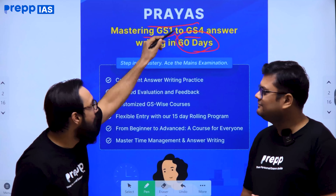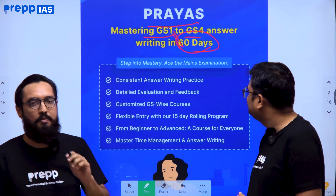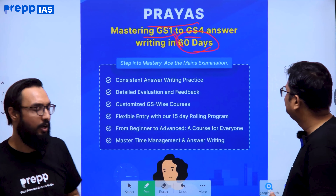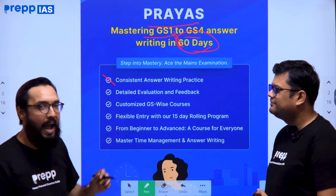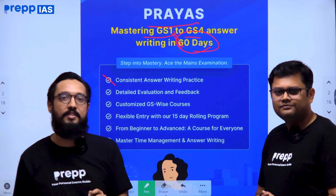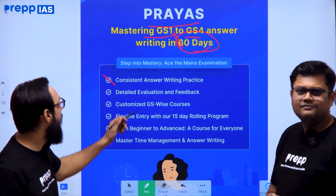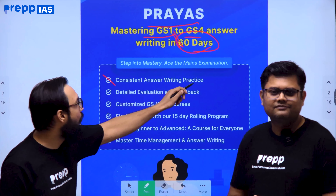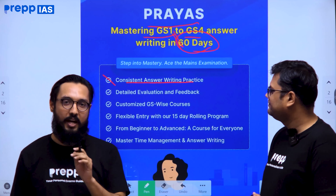Let me give you a brief idea of what we will do. You will be able to master answer writing skill in just 60 days. The first problem we address is lack of consistency in answer writing, which is why we will give you consistent practice through live sessions.